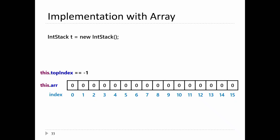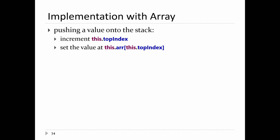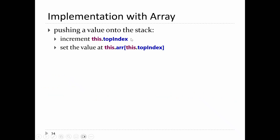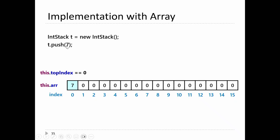The constructor makes a new array of that size and sets top index to minus one — that's the index of the element at the top of the stack, indicating it's empty. In Java when you make a new array all elements are set to zero. To push a value, assuming there's space: add one to top index, then set the array at top index to the pushed value. So pushing 7 makes top index 0 and sets arr[0] to 7. Pushing minus 5 makes top index 1 and sets arr[1] to minus 5.